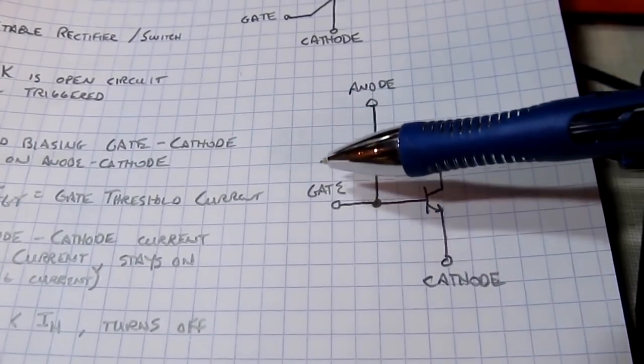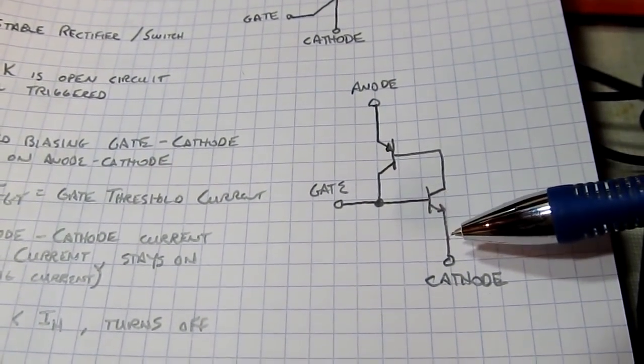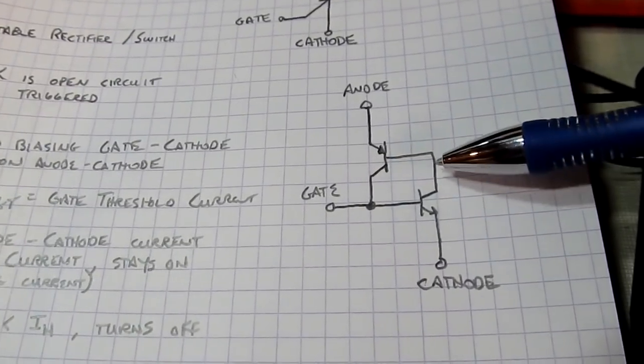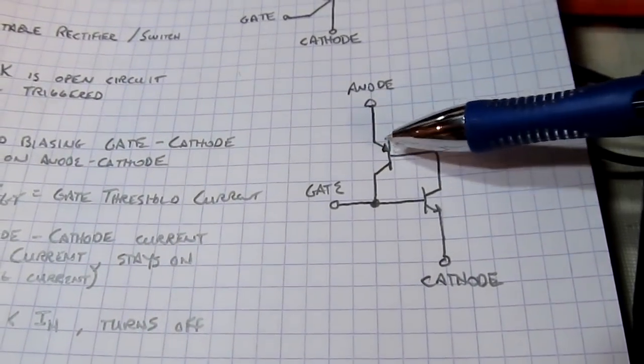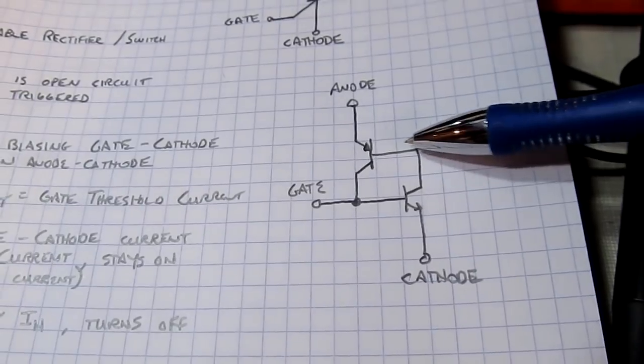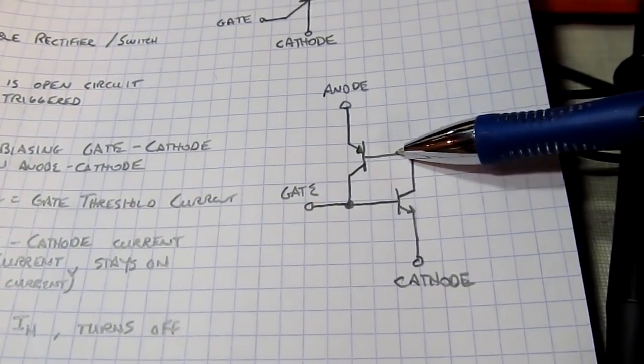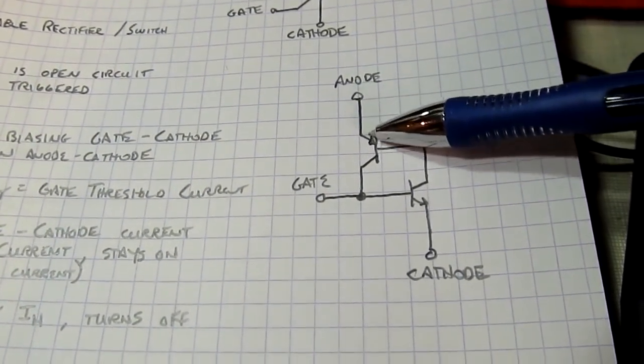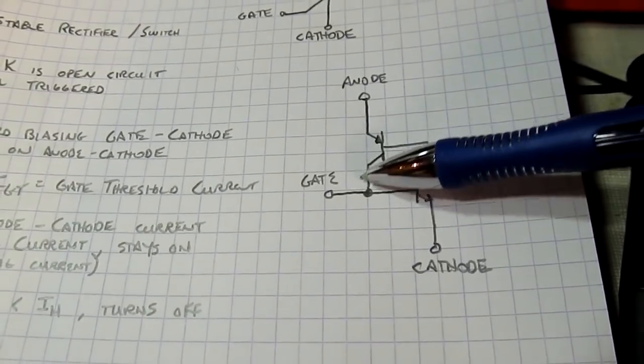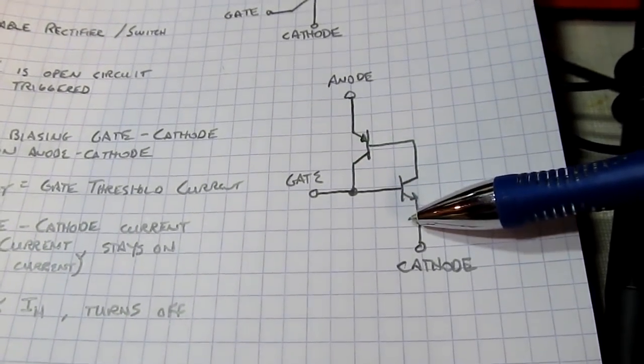As soon as you apply some bias to the gate, this transistor starts to conduct. When it starts to conduct, it pulls some collector current, which pulls base current through this PNP transistor, when base current is pulled through here, current flows down out of the collector, and therefore supplies base current to this device.